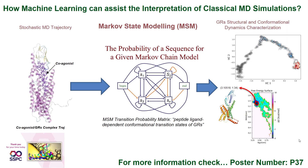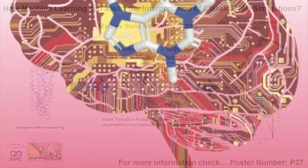The overall abstract is how machine learning can assist the interpretation of classical molecular dynamics simulations. Here we demonstrate how class B GPCR activation kinetics can be studied in atomic detail by combining molecular dynamics simulation with Markov state modeling. The overall idea is to provide an integrative approach and workflow for the predictive modeling of long time-scale dynamics of GPCR systems using machine learning-based modeling to analyze physics-based simulation information. For more information, please check poster number P37.